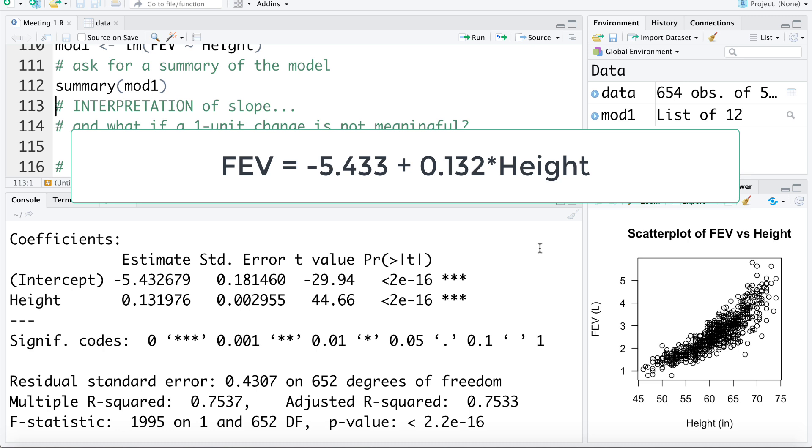The interpretation of the model's intercept is that when the height is 0 inches, we'd expect the mean lung capacity to be negative 5.43 liters. Now again, this isn't a meaningful interpretation, largely because we haven't observed data in the range of height of 0, or in fact we can't have someone with a height of 0. But this is the direct interpretation of the intercept, and we had talked previously about the idea of centering variables. So we can center the height variable if we want to give the intercept a more meaningful interpretation.